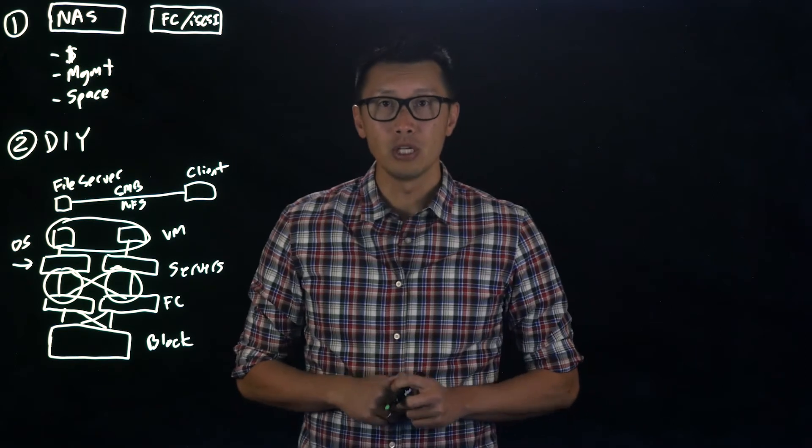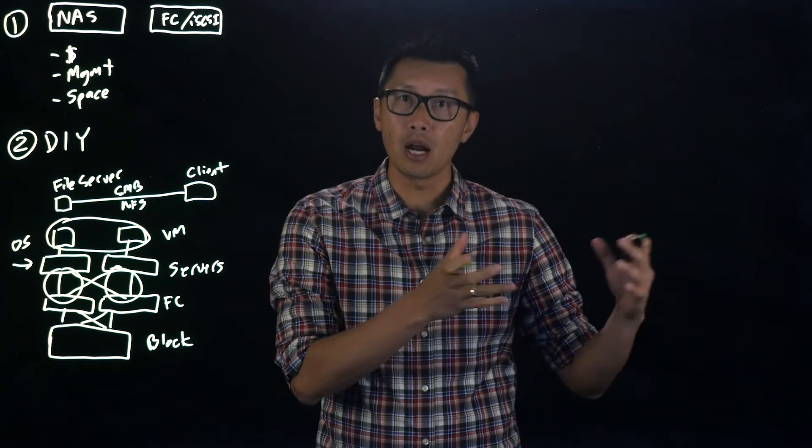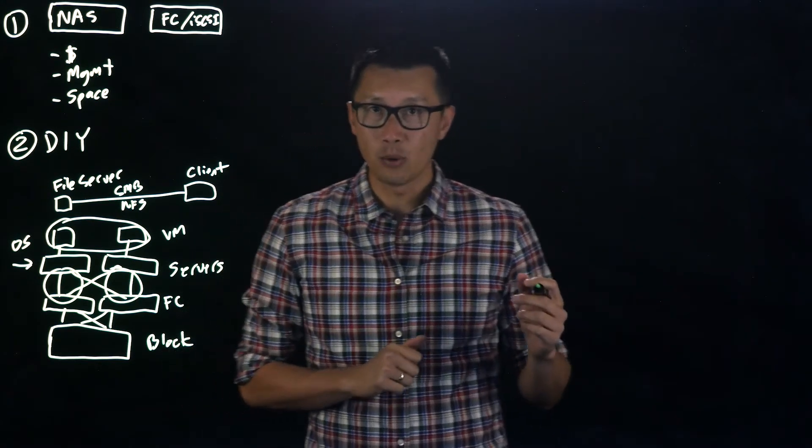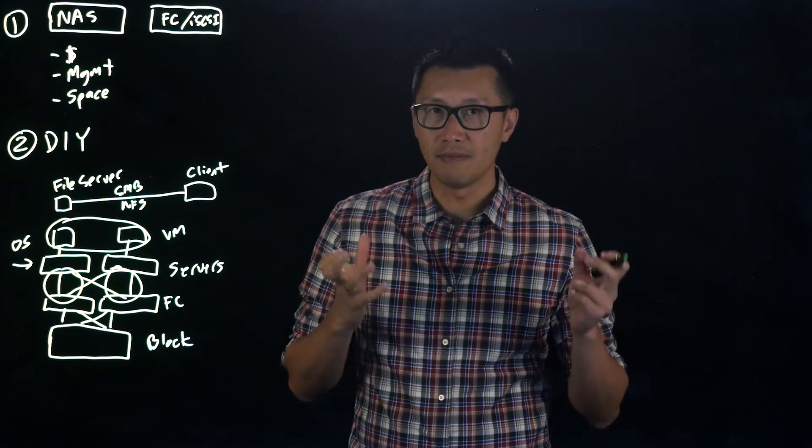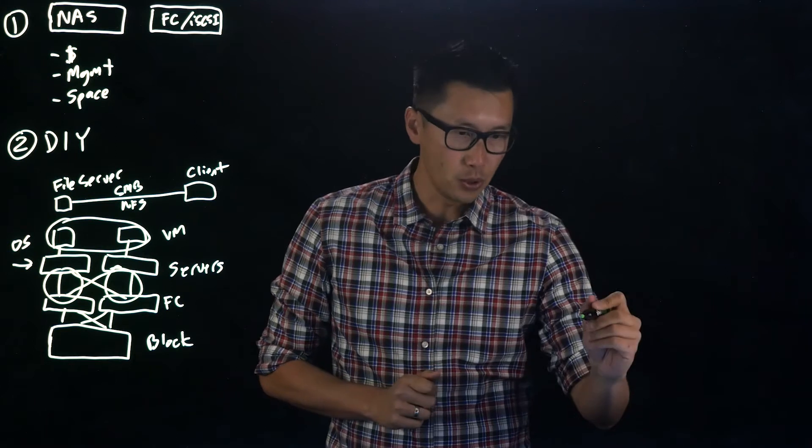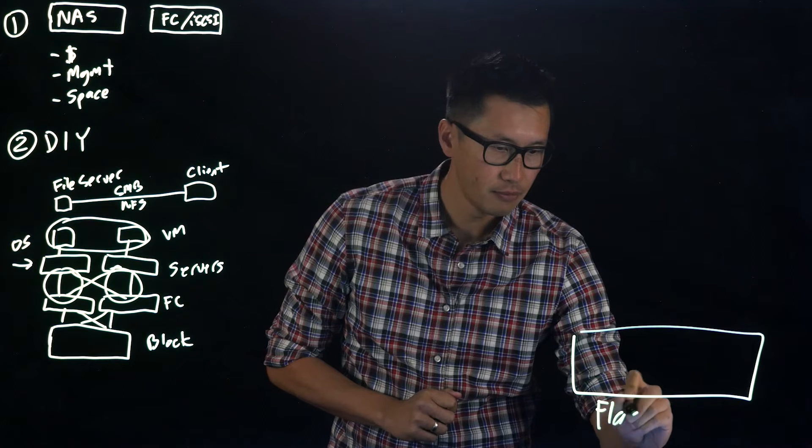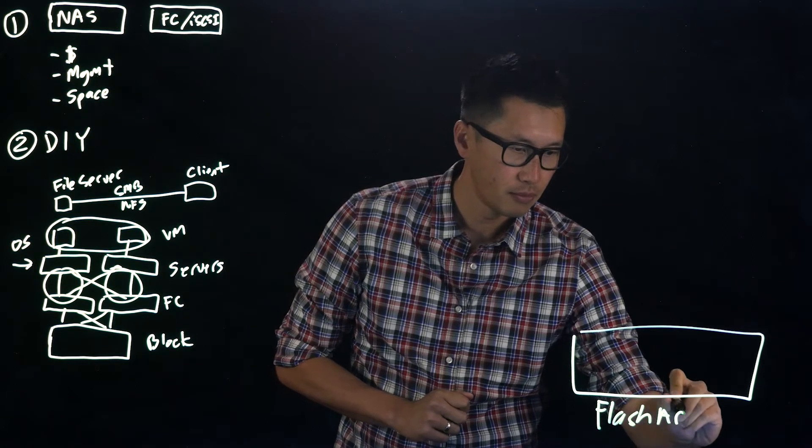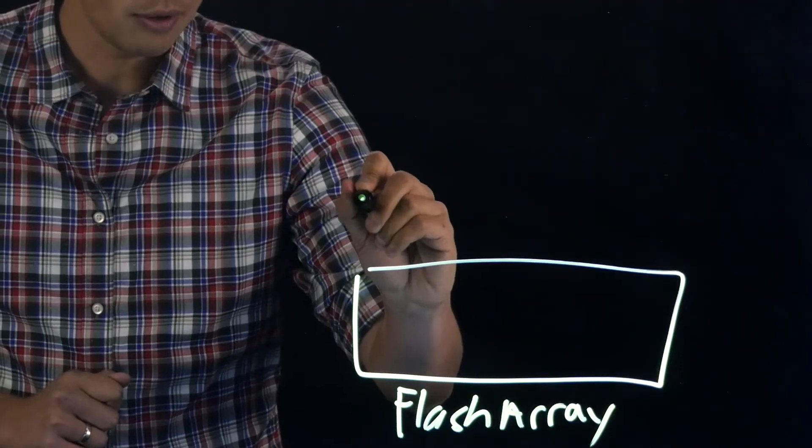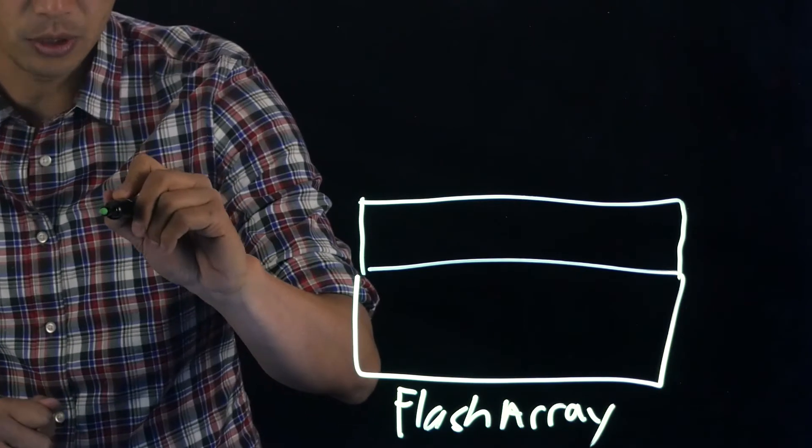How we do it at Pure Storage is take everything you see in the do-it-yourself world and put it all on the flash array and automate it for you, so you don't have to do much except run a few commands. How we do that is leverage Purity Run. Purity Run is a virtualized environment on the flash array itself. Within the flash array, we carve out some dedicated resources and we call that Purity Run.